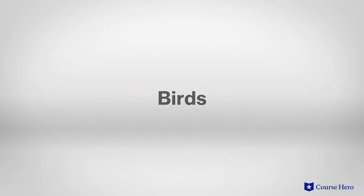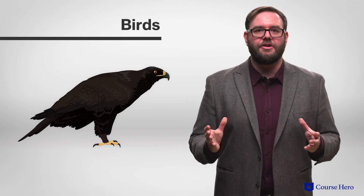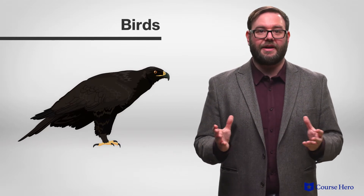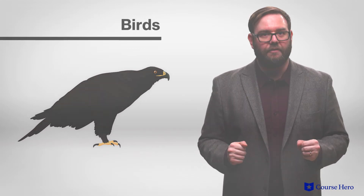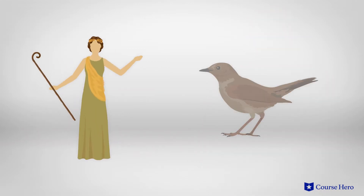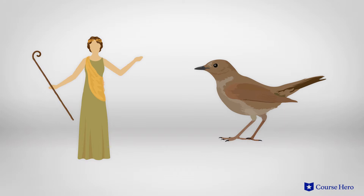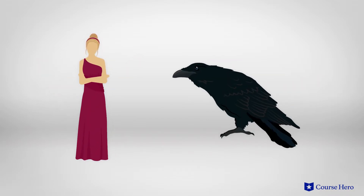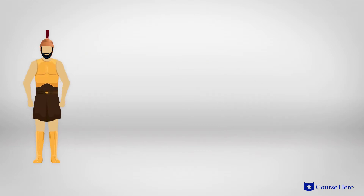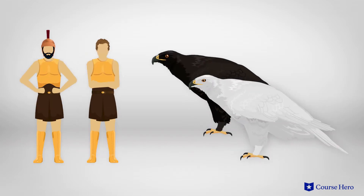Birds are another notable symbol. Characters are often compared to birds, offering details about the character's personality, fate, and moral righteousness — or lack thereof. Cassandra is a helpless nightingale and a singing swan before her death. Clytemnestra, in her murder, is compared to the death-seeking raven. Heading to war, Agamemnon and Menelaus are two proud eagles. Menelaus and Agamemnon are also represented as birds whose nest has been robbed of Helen.